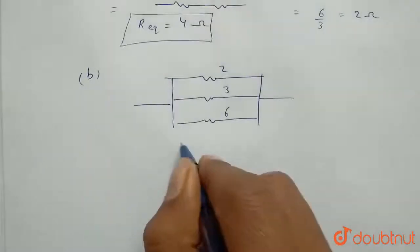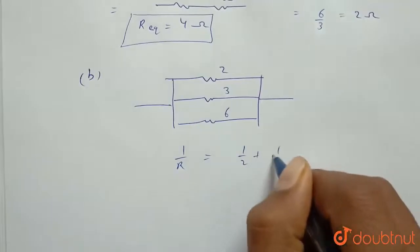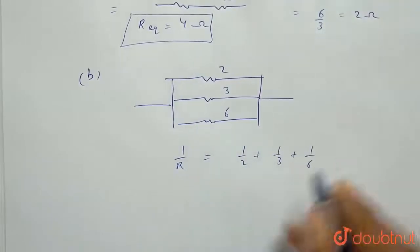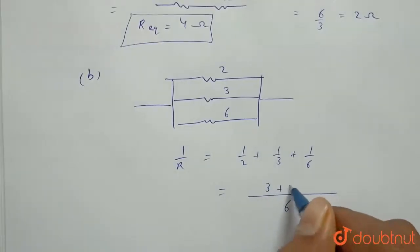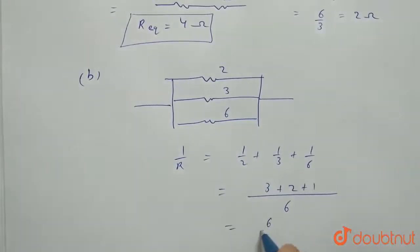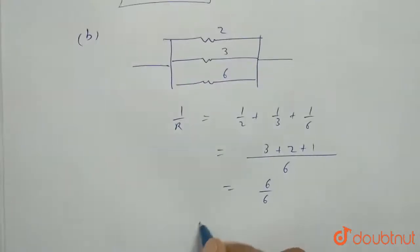Then what we will get: 1 upon R equivalent equals to 1 upon 2 plus 1 upon 3 plus 1 upon 6, which can be written as 3 plus 2 plus 1 upon 6. So we are getting R equivalent equals to 1.